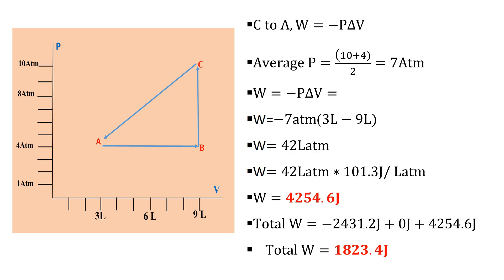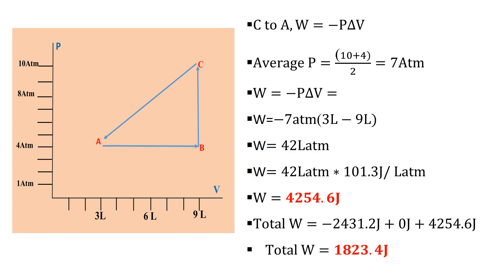The total work done is the sum of all three processes: −2,431.2 joules (A to B) + 0 joules (B to C) + 4,254.6 joules (C to A), giving a total work done of 1,823.4 joules.